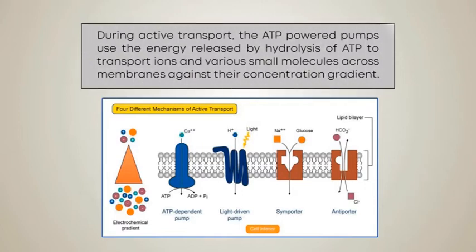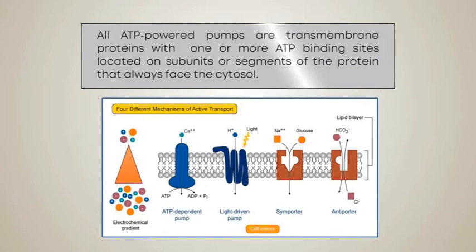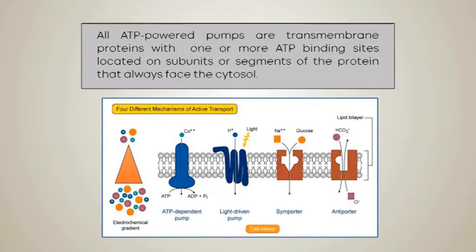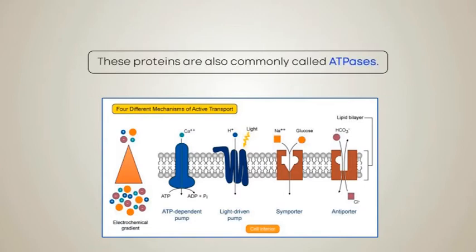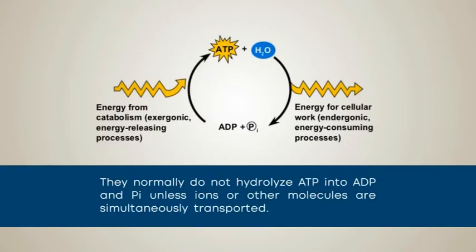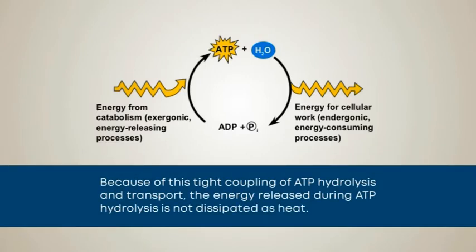During active transport, ATP-powered pumps use the energy released by hydrolysis of ATP to transport ions and various small molecules across membranes against their concentration gradient. All ATP-powered pumps are transmembrane proteins, with one or more ATP binding sites located on subunits or segments of the protein that always face the cytosol. These proteins are also commonly called ATPases. They normally do not hydrolyze ATP into ADP and inorganic phosphate unless ions or other molecules are simultaneously transported. Because of this tight coupling of ATP hydrolysis and transport, the energy released during ATP hydrolysis is not dissipated as heat.